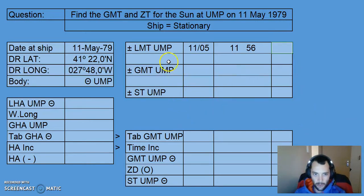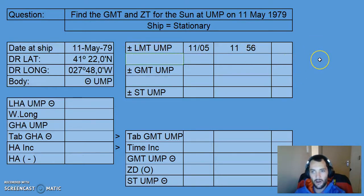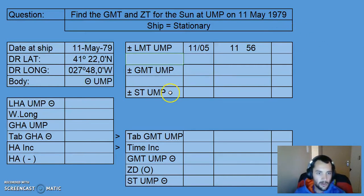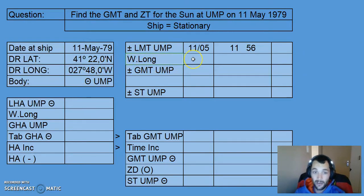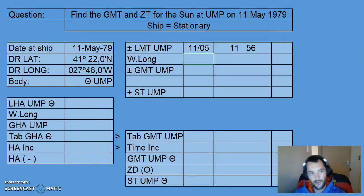Now, that 11:56 is the time at the actual meridian — it is the time for the observer's latitude at your specific meridian; it is not the time at the ship. So what we need to do is apply a longitude correction. Our longitude is west, so we're going from the local meridian towards the Greenwich meridian, and therefore this longitude must be added.